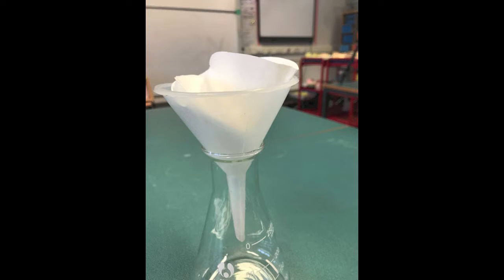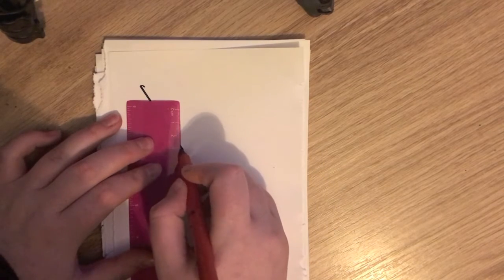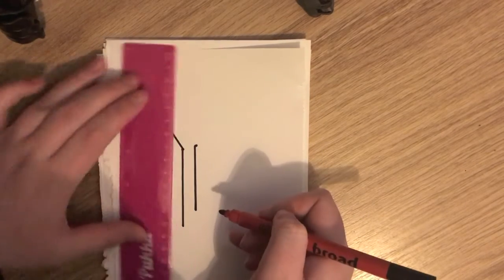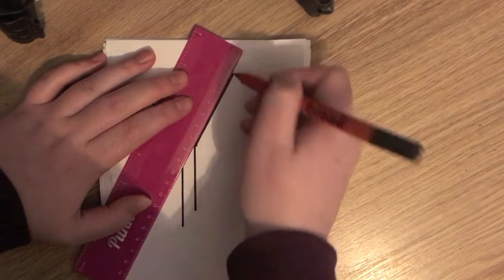Filter funnels are used with filter paper to separate solids from liquids. When folding filter paper, fold it in half and then in half again. This cone is then held within the filter funnel by wetting it with some of the solvent that you are using.